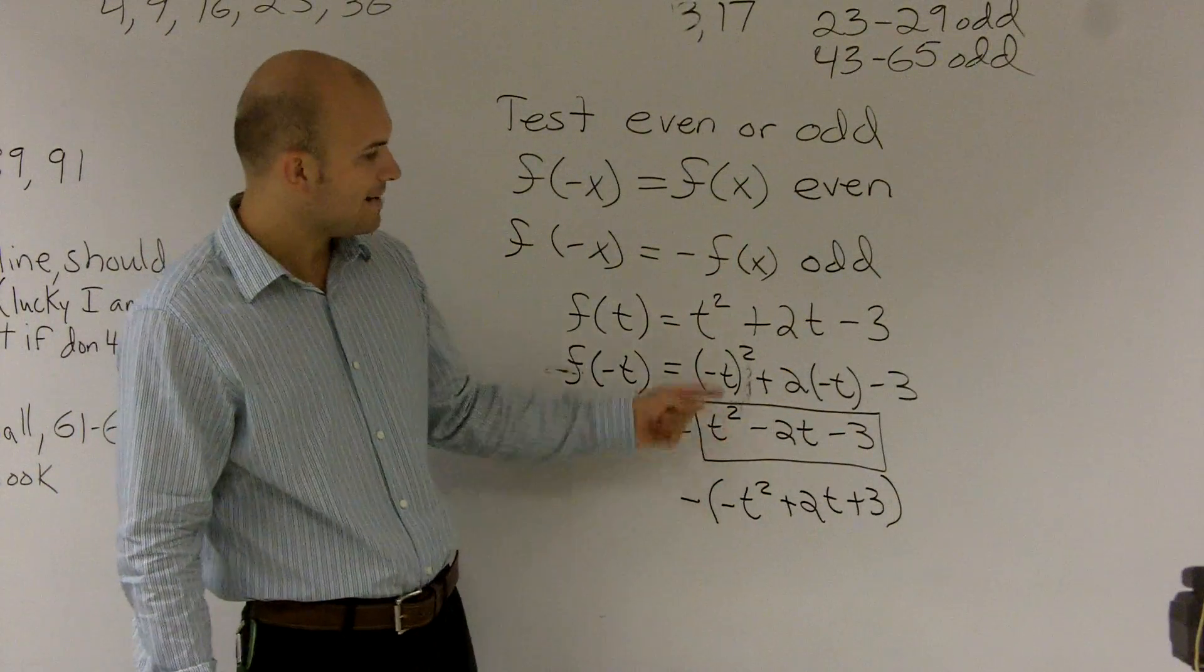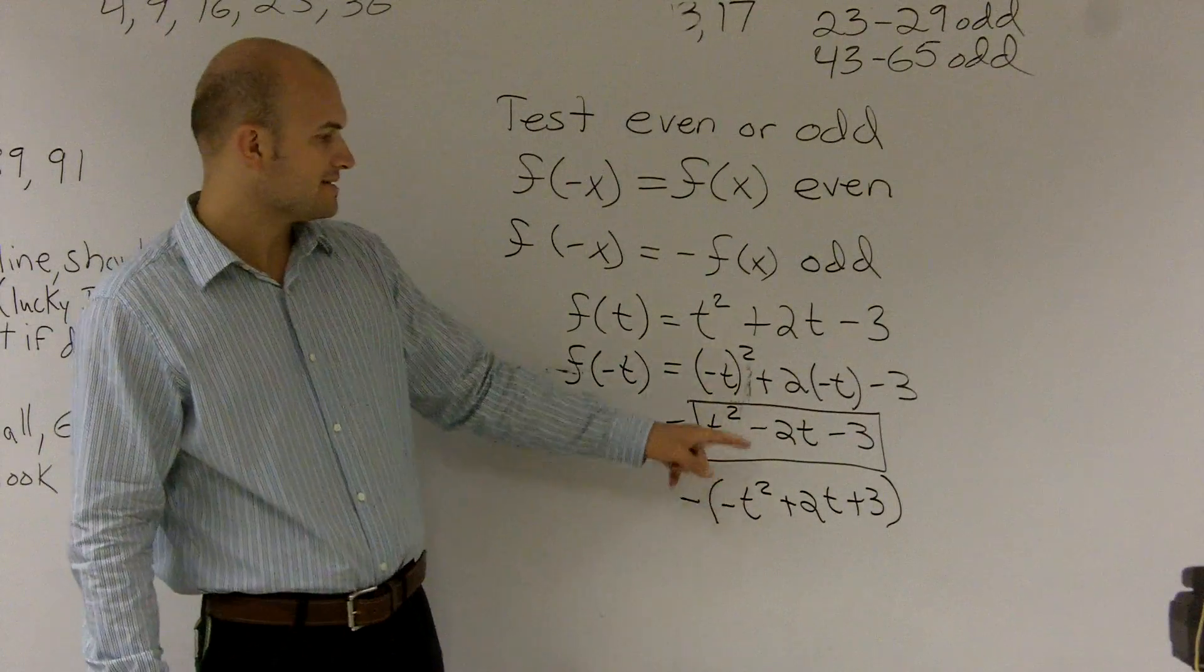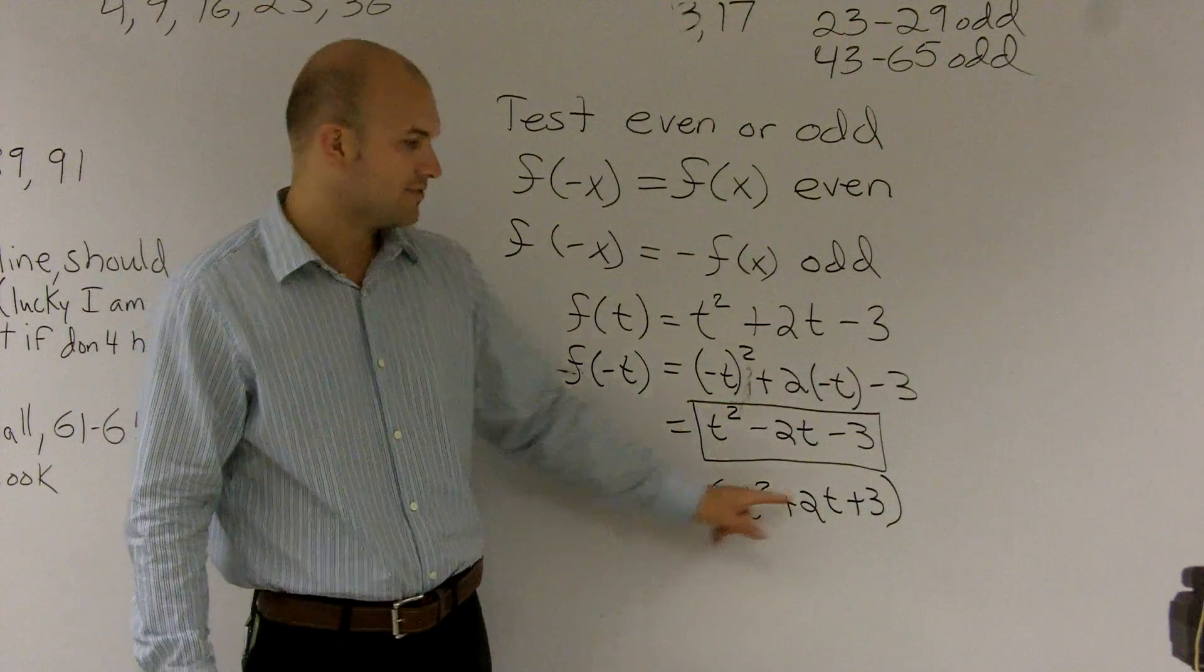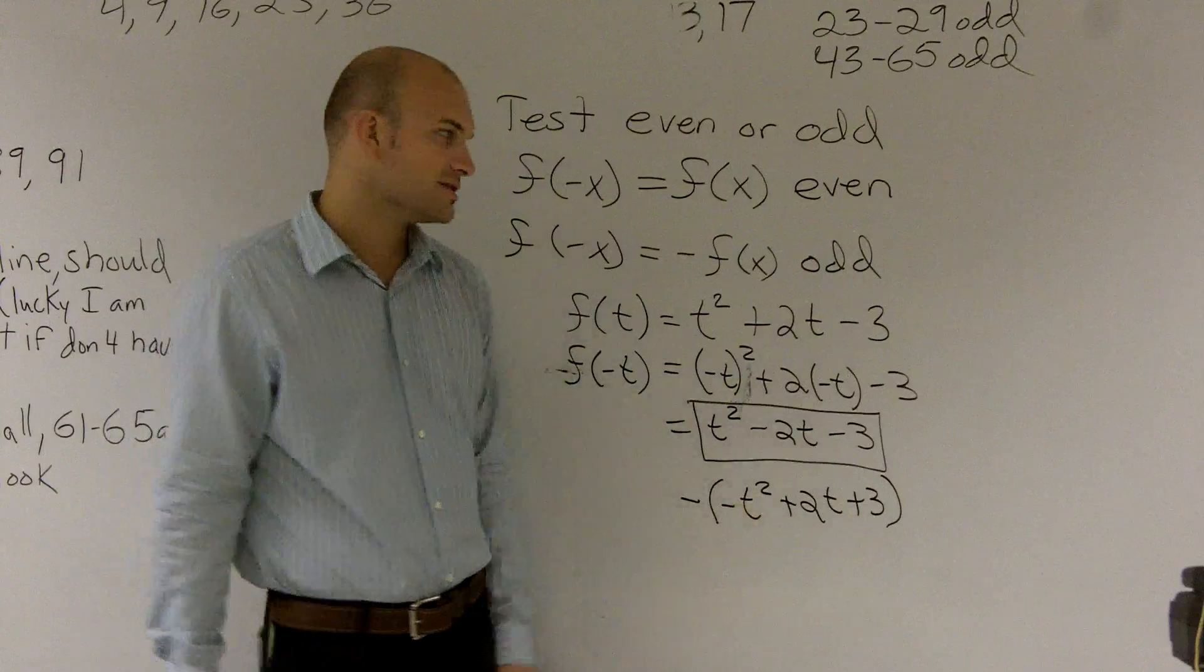Well, it's not even because it's not the same as my original function. And it's not odd because when I factor out a negative 1, it's not a negative 1 factored out with my function inside. So therefore, this is neither.